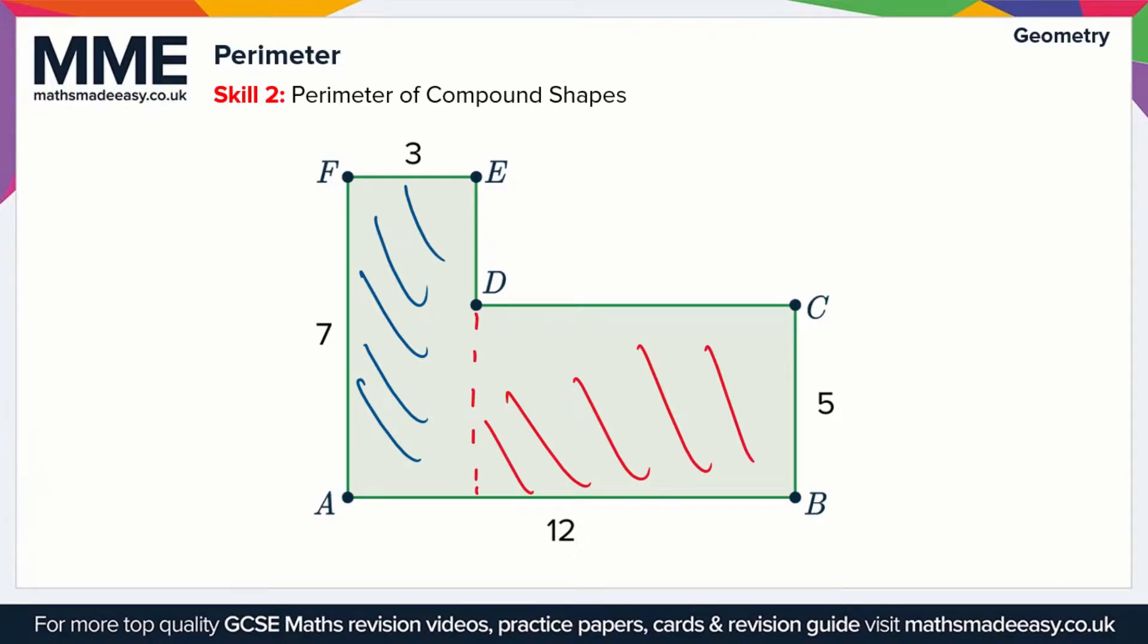In order to work out the perimeter we need to know what all the sides are. As you can see we're missing this side length here E to D, and we're missing this side length here D to C. Luckily they're fairly straightforward to work out.